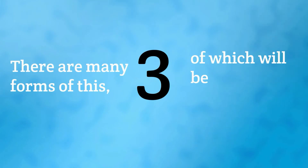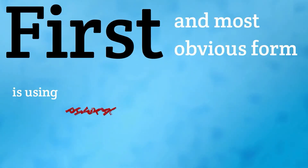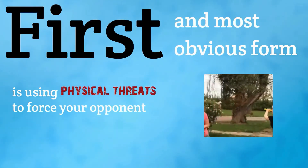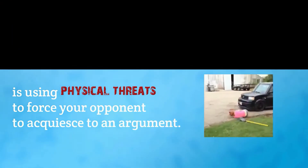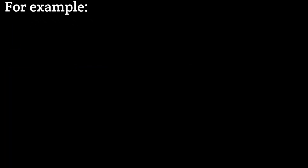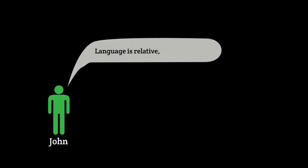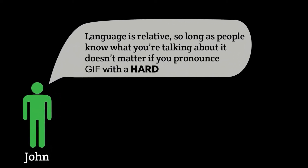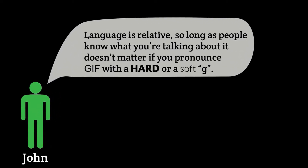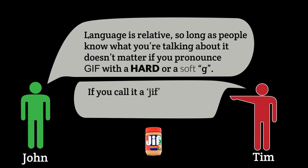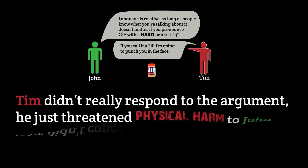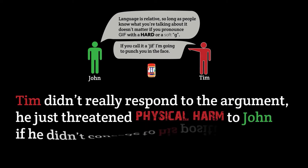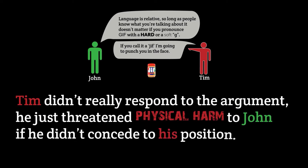There are many forms of this, three of which will be covered here. The first and most obvious form is using physical threats to force your opponent to acquiesce to an argument. For example, John argues that language is relative — so long as people know what you're talking about, it doesn't matter if you pronounce 'gif' with a hard or soft g. Tim responds, 'If you call it a gif, I'm going to punch you in the face.' Tim didn't really respond to the argument; he just threatened physical harm to John if he didn't concede to his position.